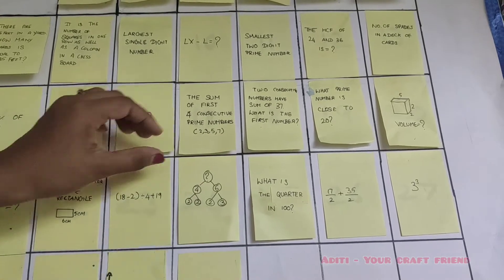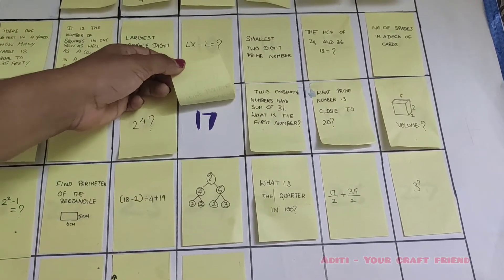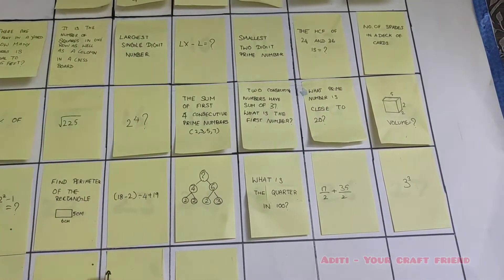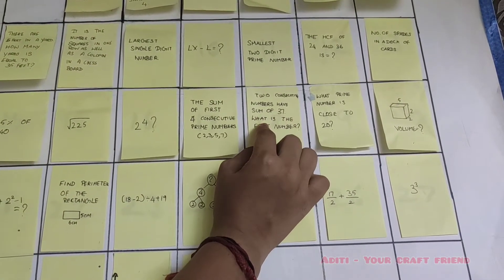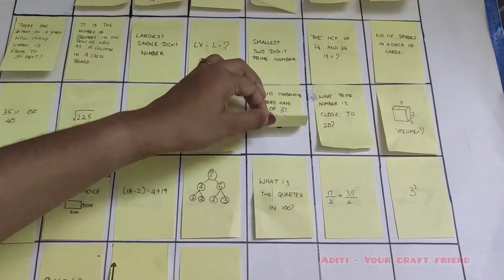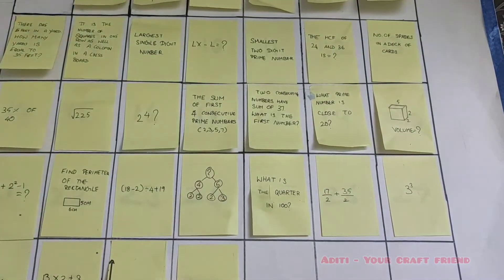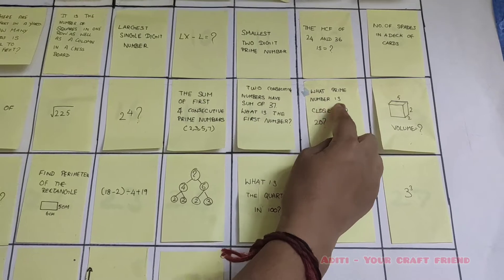The sum of first 4 consecutive prime numbers: 2, 3, 5, and 7. What is the answer? 17. Two consecutive numbers have the sum of 37. What is the first number? It's 18.